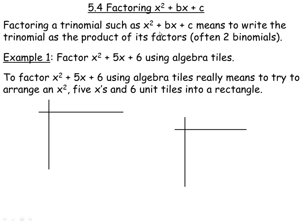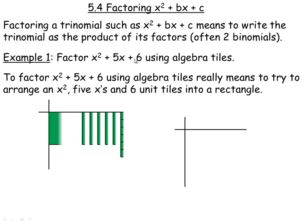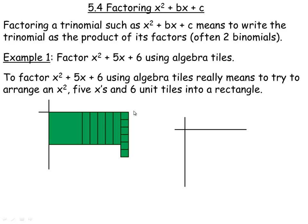To factor a trinomial such as x squared plus bx plus c really means to write that trinomial as the product of its factors, which is usually two binomials. We're going to take a look at an example using algebra tiles here and then five algebra ones on the next page. So we're asked to factor x squared plus 5x plus 6 using algebra tiles. To factor that really means to take an x squared, 5x's, and 6 unit tiles and rearrange them so they form a completely filled-in rectangle.